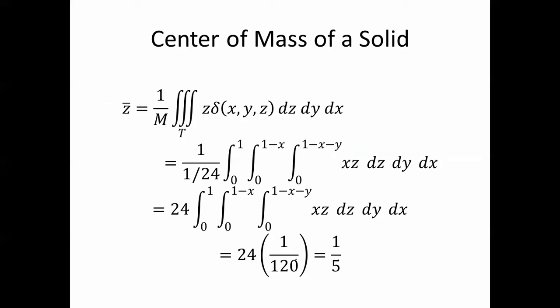And z turns out to be the same way. 1 over m, triple integral of z delta of xyz dz dy dx. So 1 over 1 24th is 24, and this integral turns out to be 1 over 120, in other words, 1 5th.